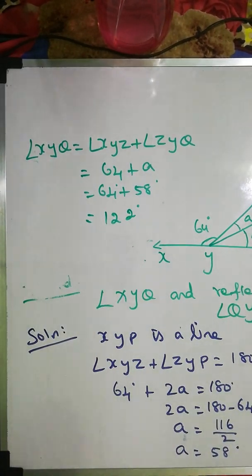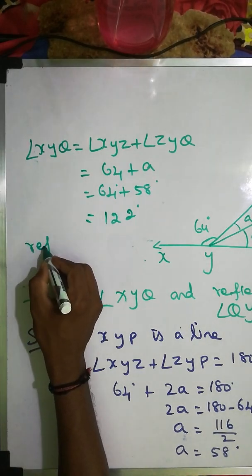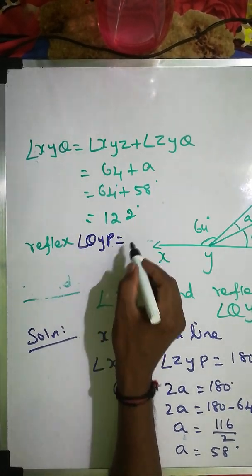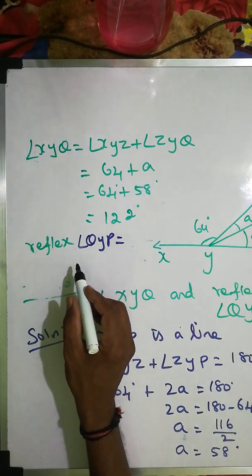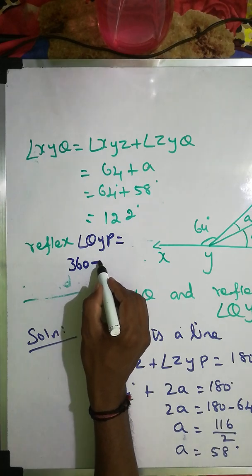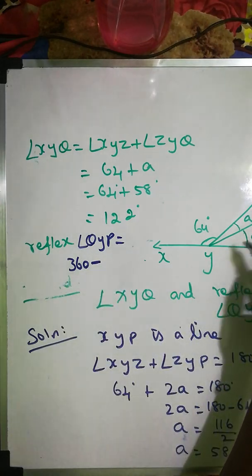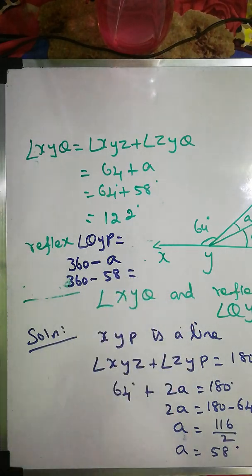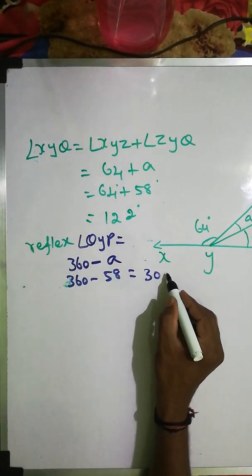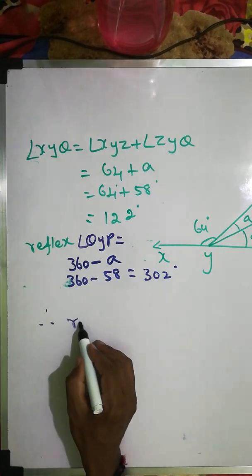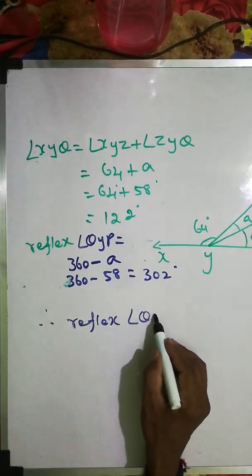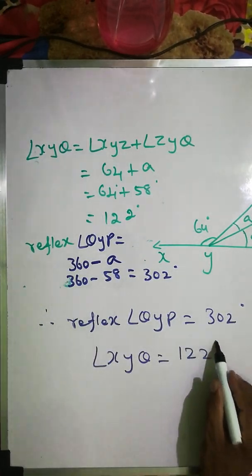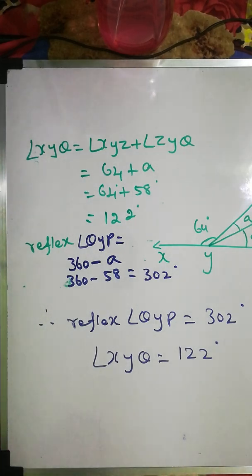Now we find the reflex of angle QYP. Reflex of angle QYP equals 360 minus angle QYP. Angle QYP equals A equals 58 degrees. So reflex of angle QYP equals 360 minus 58, which equals 302 degrees. Therefore angle XYQ equals 122 degrees and reflex of angle QYP equals 302 degrees. Exercise 6.1 is complete.